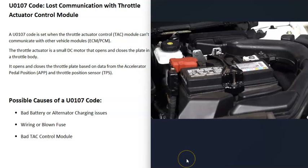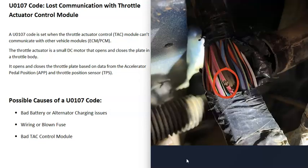The first thing to do whenever you're getting any kind of computer-related codes is be sure that the battery is good and that the alternator is charging correctly, because all these computer modules need a good, stable power supply, or it could throw them off and cause them to do weird things. Be sure there are no battery problems and no charging issues going on.